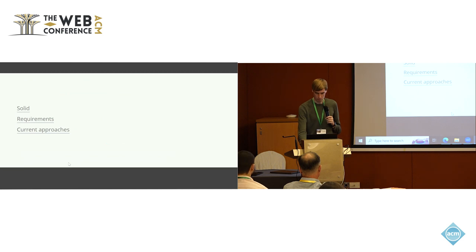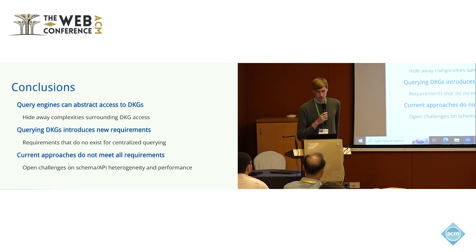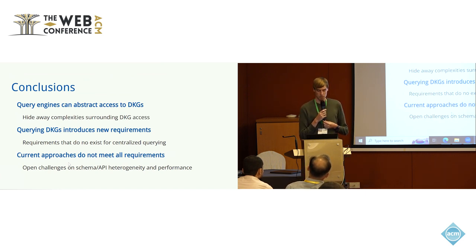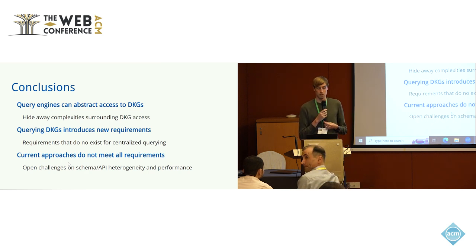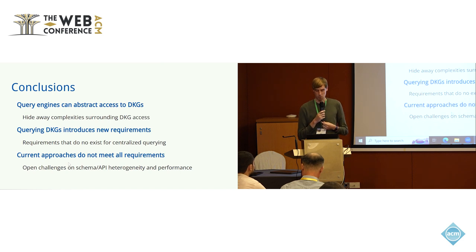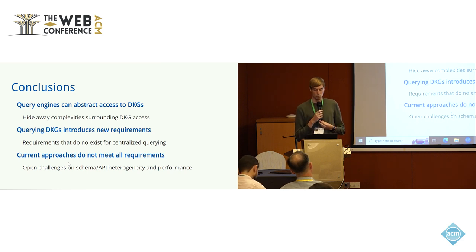To conclude: what we wanted to do is hide away the complexities for interacting with decentralized knowledge graphs, and the focus was on figuring out how query engines can meet these requirements. We identified eight different requirements and saw that not all existing approaches meet all of them. Schema and API heterogeneity need more work in the future, as does performance. Thanks everyone.